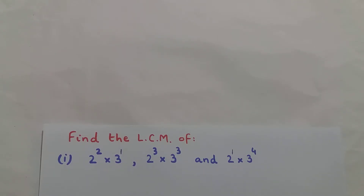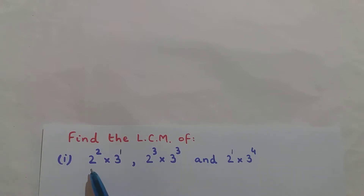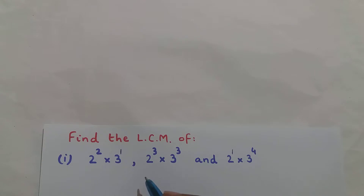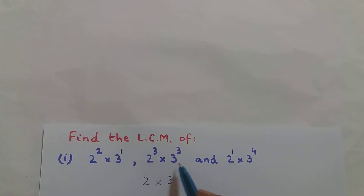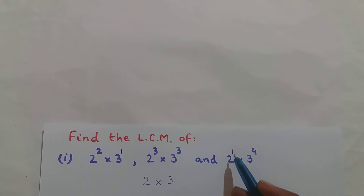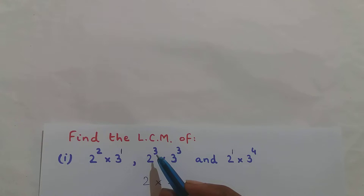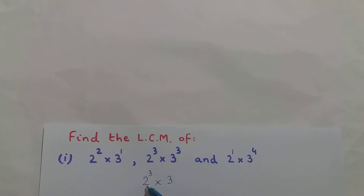Now what you do is write all the different bases in this entire question. I have two different bases: 2 and 3, so I will write 2 × 3. Now what is the exponent of base 2? In the expressions I have 2², 2³, and 2¹. You pick the greater exponent — 3 is greater than 2 and 1 — so the exponent of base 2 is 3.